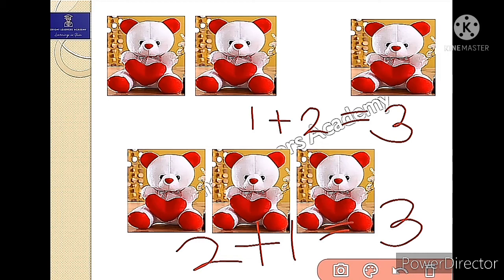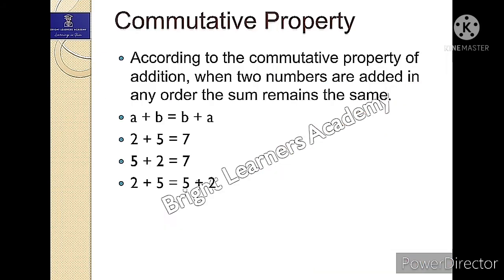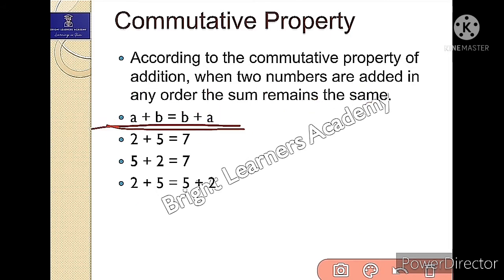In maths we call this the commutative property. According to the commutative property of addition, when two numbers are added in any order, the sum remains the same. It means a plus b is equals to b plus a.